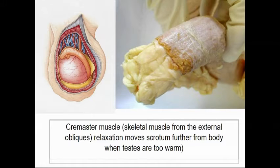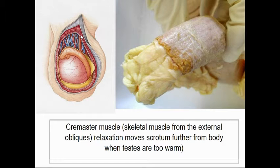Another thing that attaches to this is the cremaster muscle. The testis is within the scrotum, and the scrotum is controlled by this cremaster muscle. It moves up and down to bring the testes closer or farther from the body to regulate temperature, which is important for sperm production.